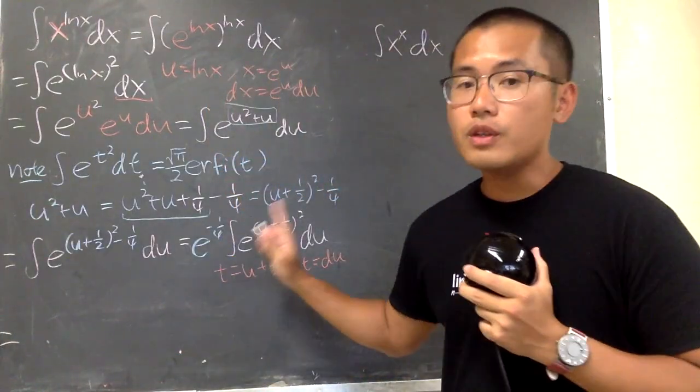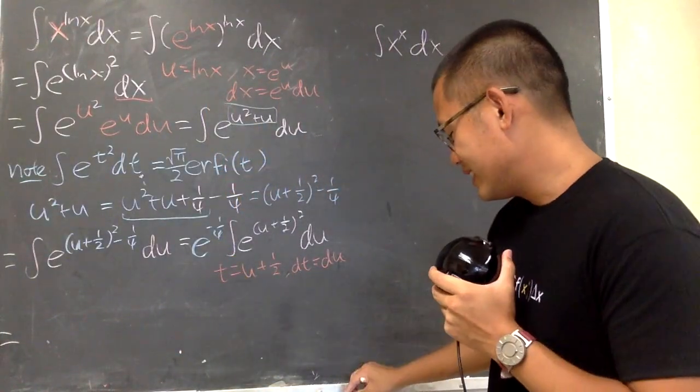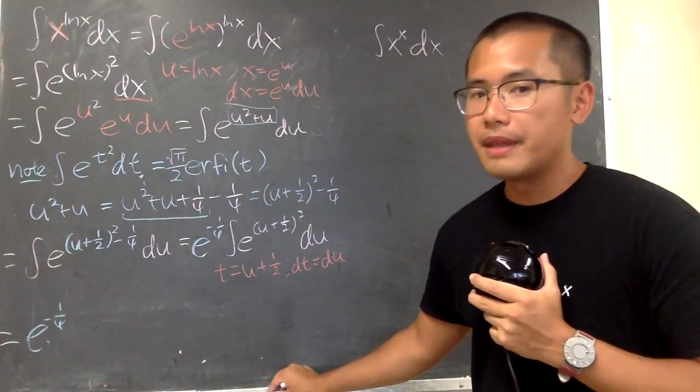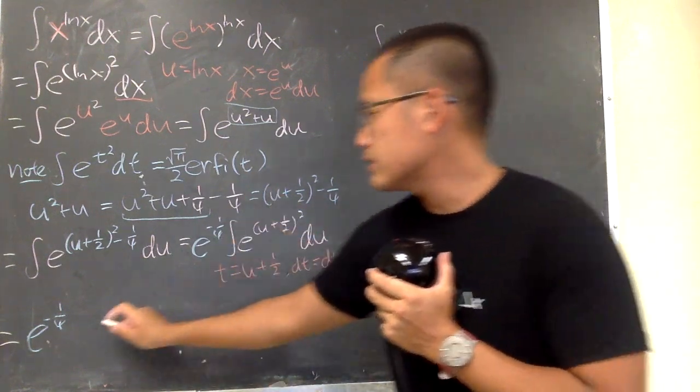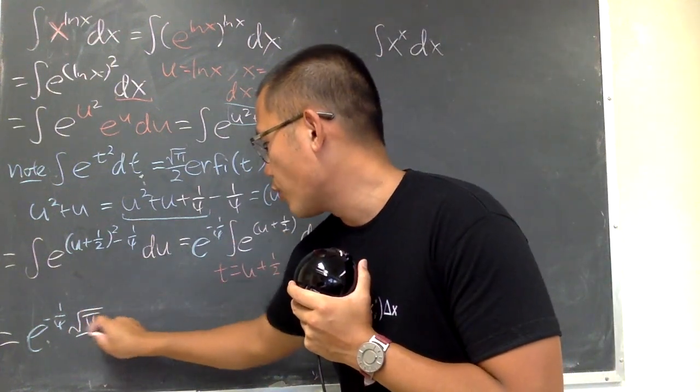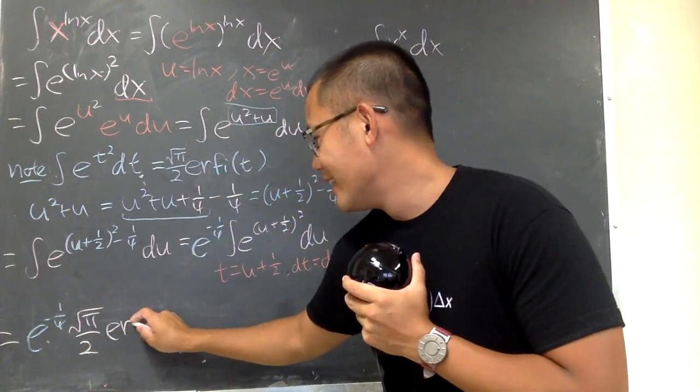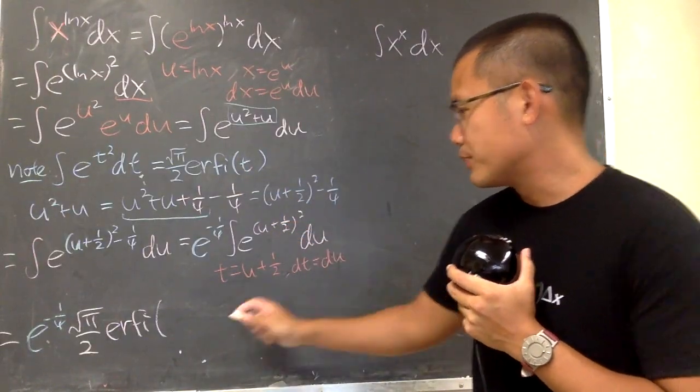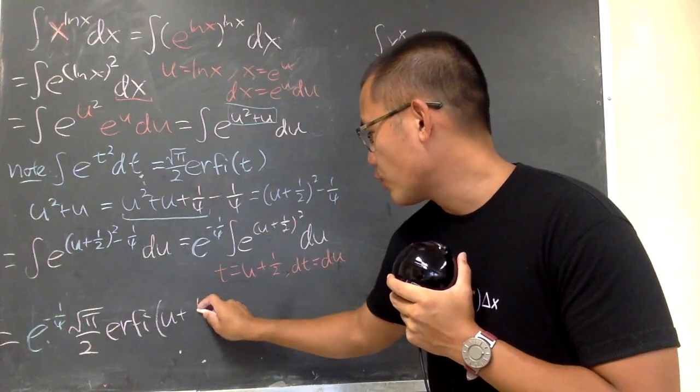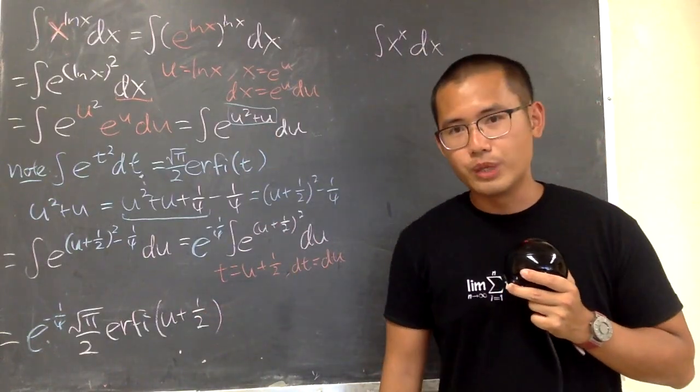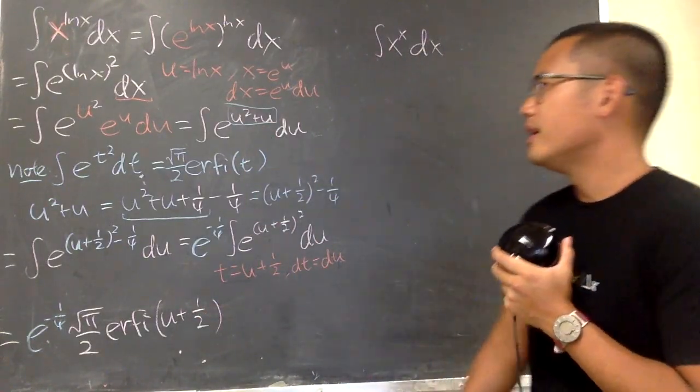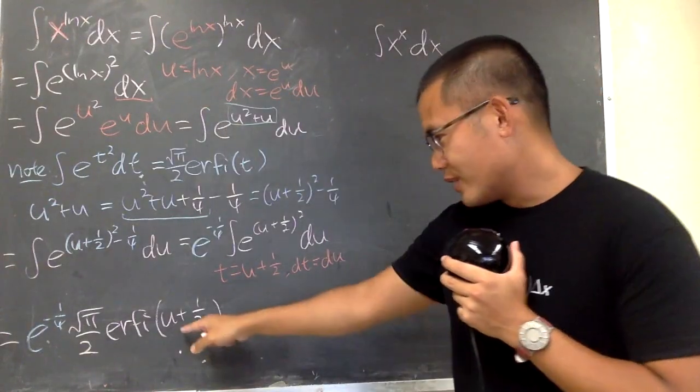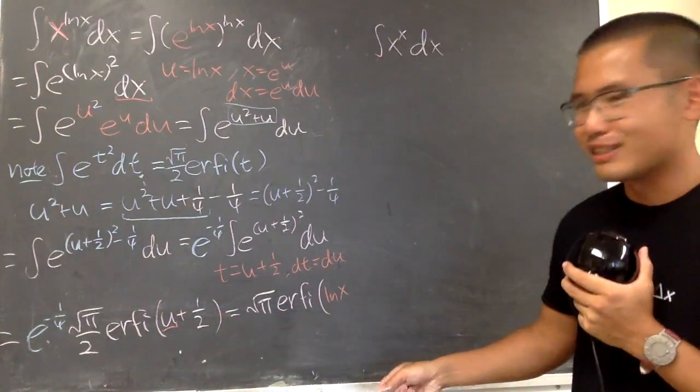Finally, you will see we still have this constant multiple, which is e to the negative 1 over 4th power. And then we have this part being the square root of pi over 4, erfi, and the input is t, which is just that. We have the u plus 1 over 2. But of course we have to go back to the x world. u is ln of x. So right there for the u, and then we have the plus 1 over 2.